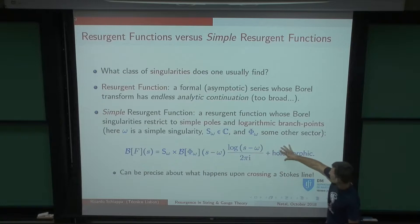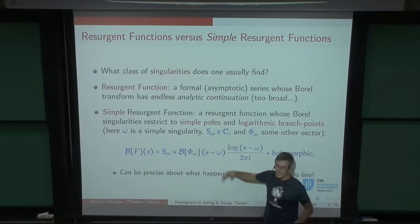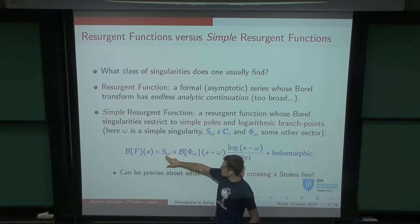I'm looking at the Borel transform of whatever I'm computing, near omega — a simple singularity. I'm going to have a logarithmic branch cut, some regular stuff I don't care about, and some coefficient in front of the log. The art of this business is to write this coefficient as the Borel of something else, and that's what makes everything clear. We write it as the Borel of something else, up to a constant.